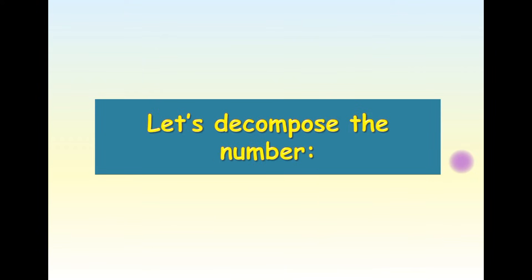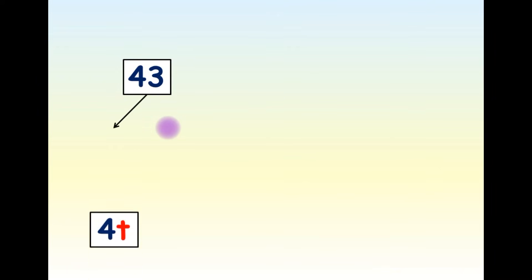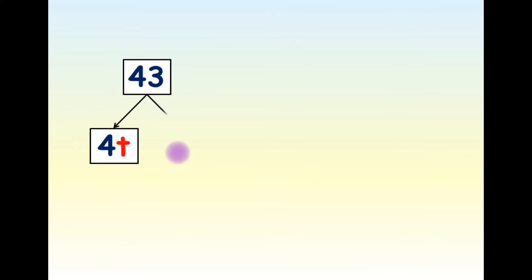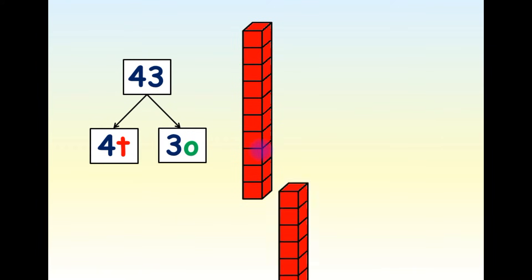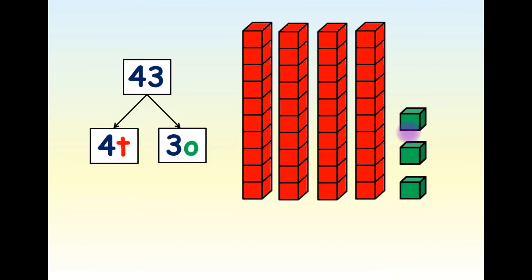Now, let's decompose the number 43. 43 is made up of 4 tens and 3 ones. We have 4 blocks of tens and 3 cubes of ones. To decompose it, we can simply say 40 plus 3 equals 43.